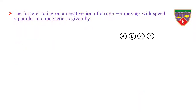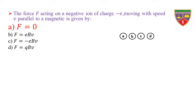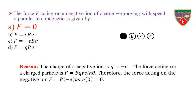The force acting on a negative ion of charge −e moving with speed V parallel to a magnetic field is given by: Option A, F = 0. Option B, F = eBV. Option C, F = −eBV. Option D, F = QBV. The key is F = 0. Therefore, the correct option is A.